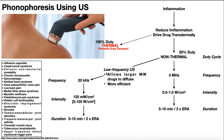We can also use low frequency ultrasound for phonophoresis. Low frequency ultrasound allows you to diffuse much larger drugs — even things the size of proteins — through the skin to particular tissues, making it more efficient. However, some machines will not have these parameters available, so you may have to use the 3 megahertz set instead. The frequency for low frequency ultrasound is 20 kilohertz, with an intensity of 125 milliwatts per square centimeter (0.125 watts per square centimeter), and a duration of 5 to 10 minutes.